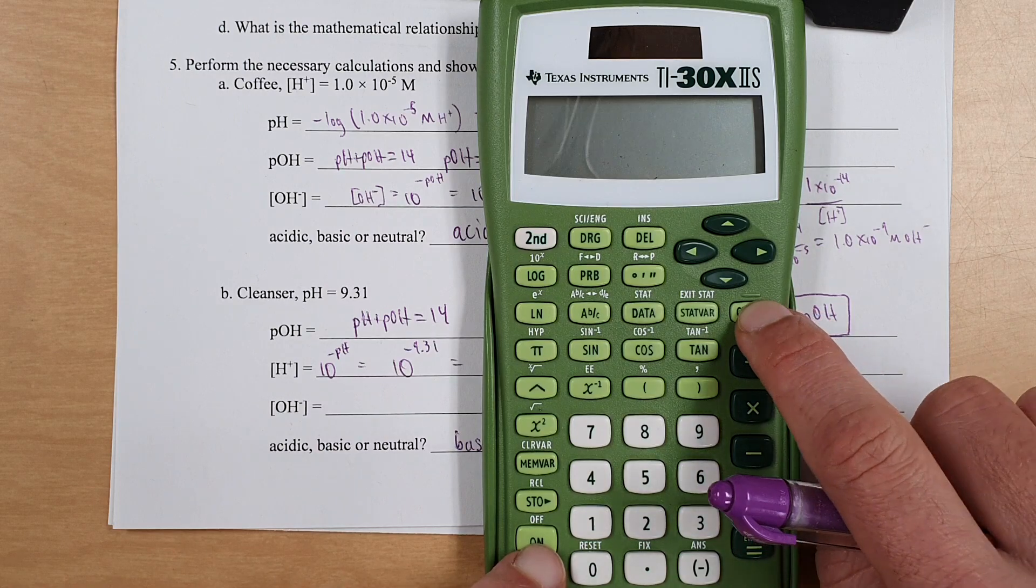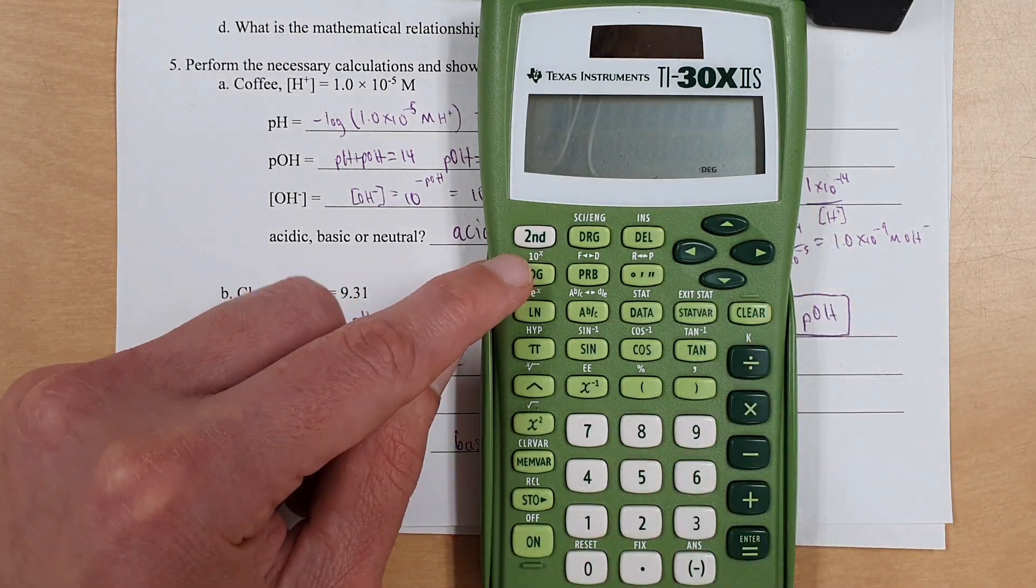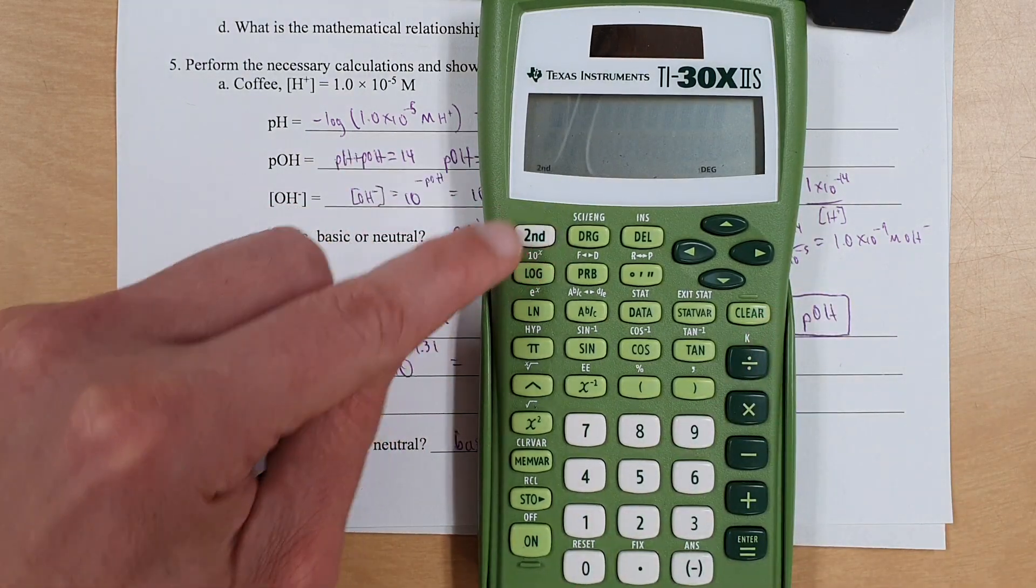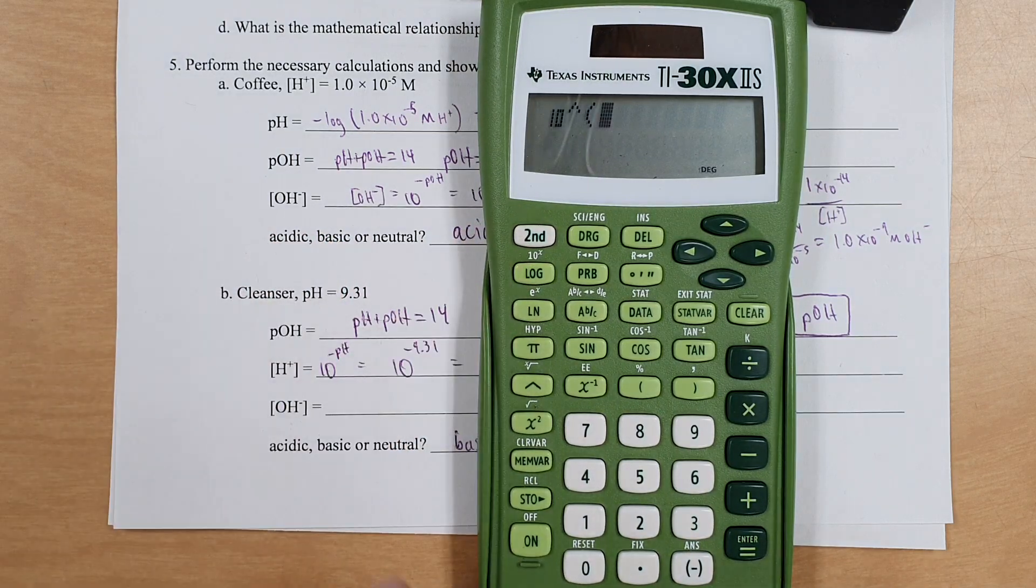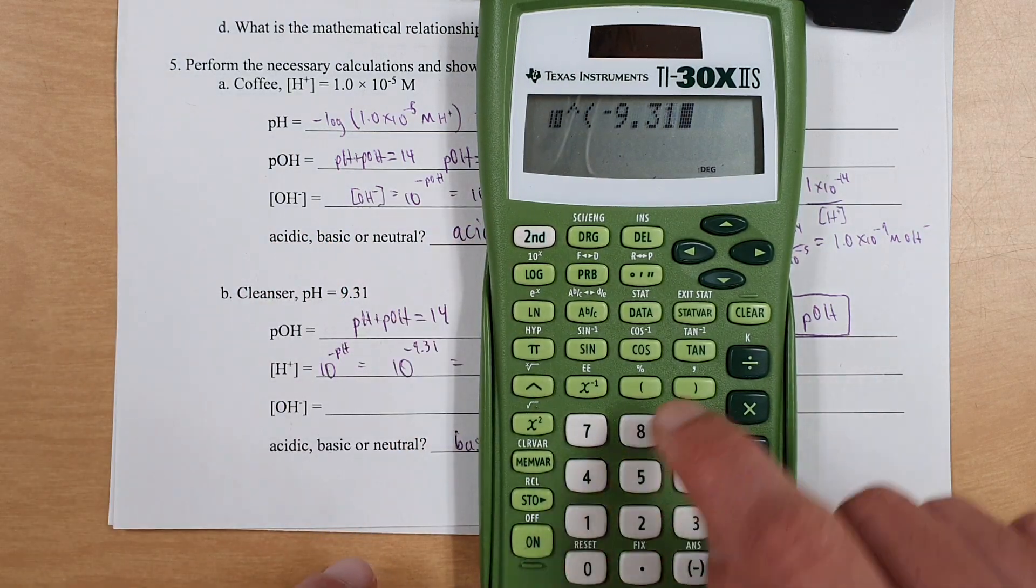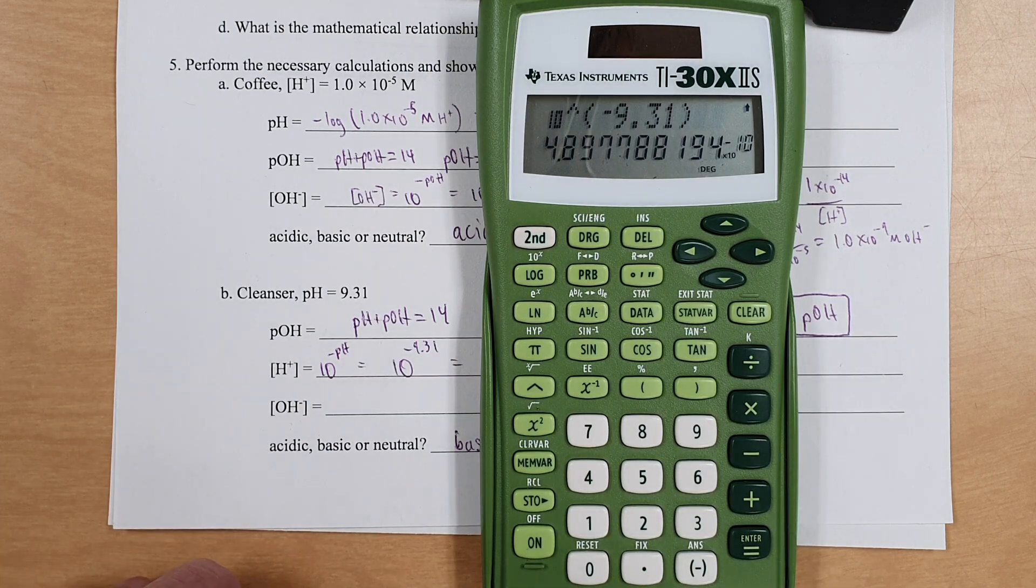I've got to do 10 to the negative 9.31. So I can either do 10 to the power of, parentheses, to avoid problems, negative 9.31, and get that answer. Or, watch this, I can get the exact same thing with a shortcut. See this up here? 10 to the x, second function, and then this activates 10 to the x. Negative 9.31, close parentheses, and it's the exact same answer. Nice shortcut.